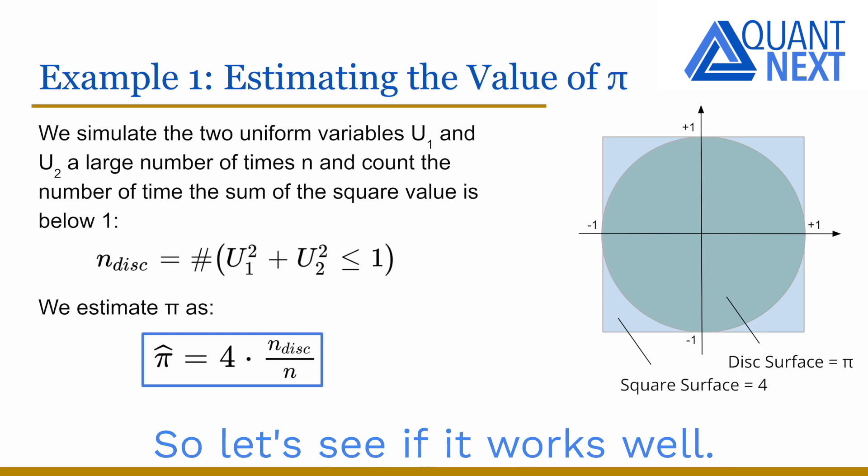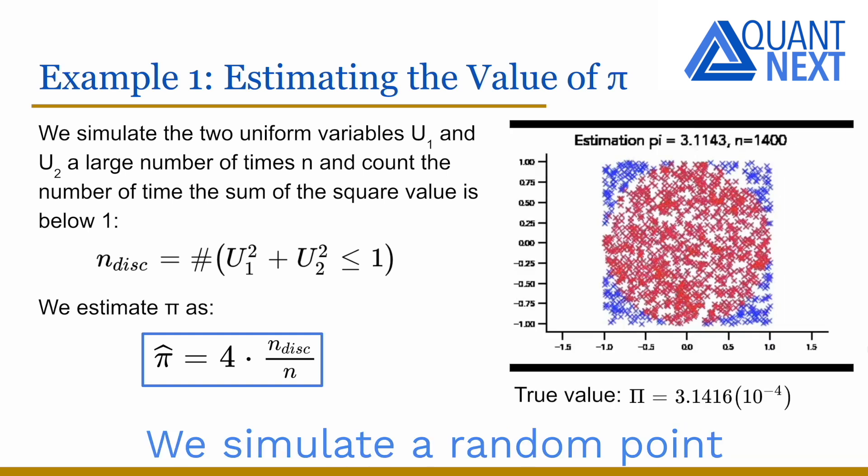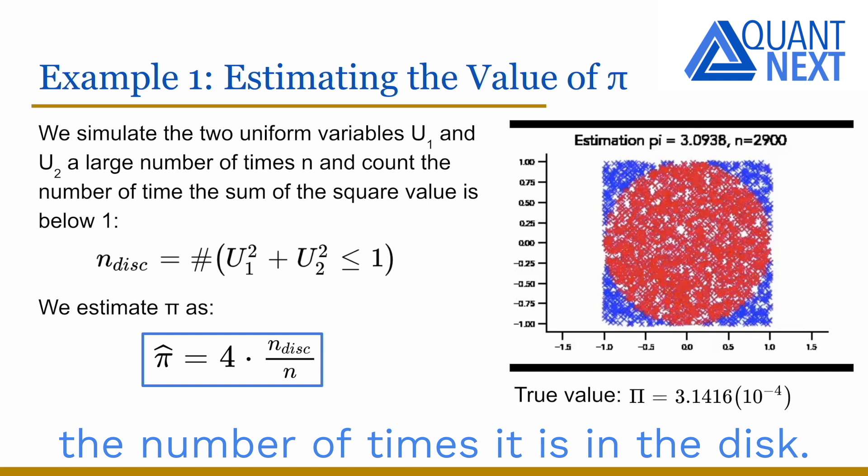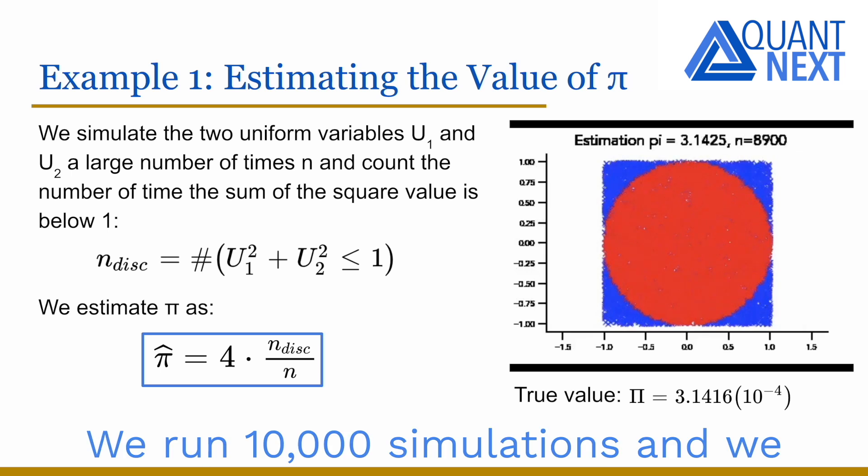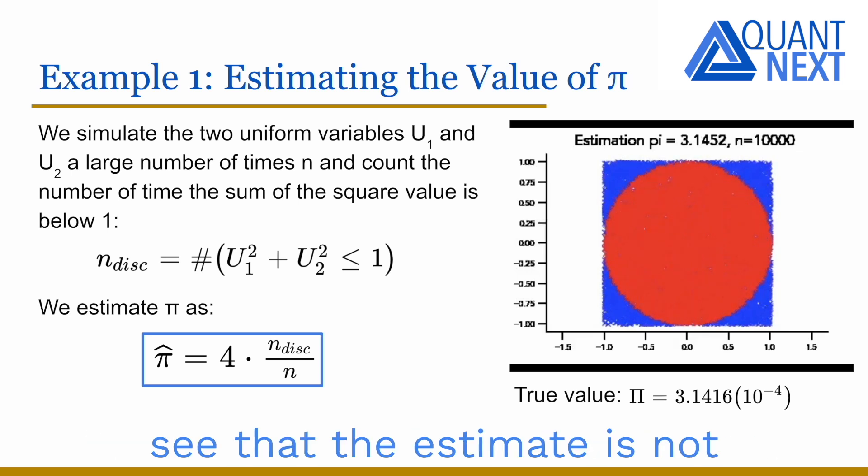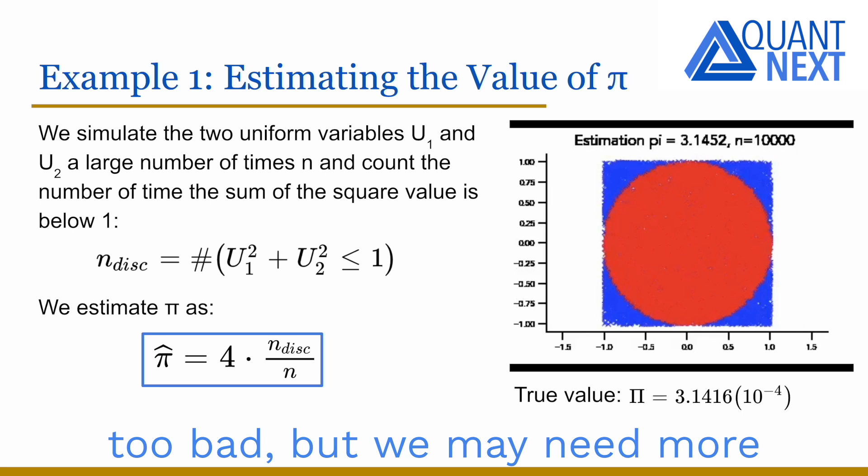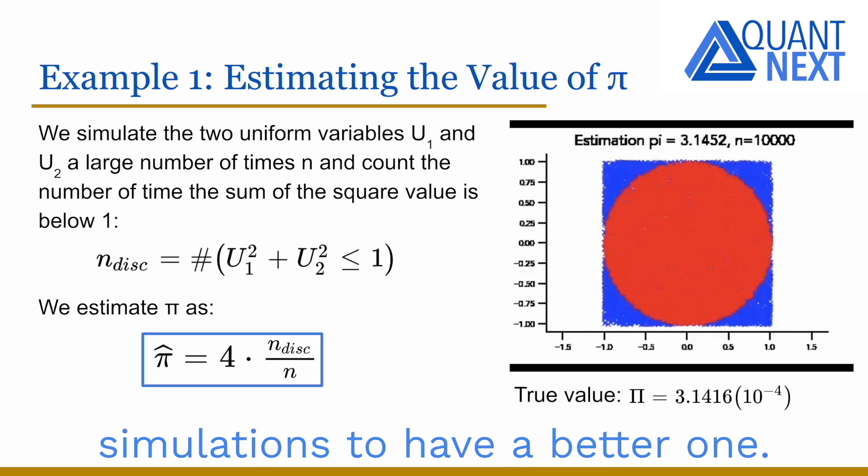So let's see if it works well. We simulate a random point in the square and we count the number of times it is in the disk. We see above the chart the estimation of pi. We run ten thousand simulations and we see that the estimate is not too bad but we may need more simulations to have a better one.